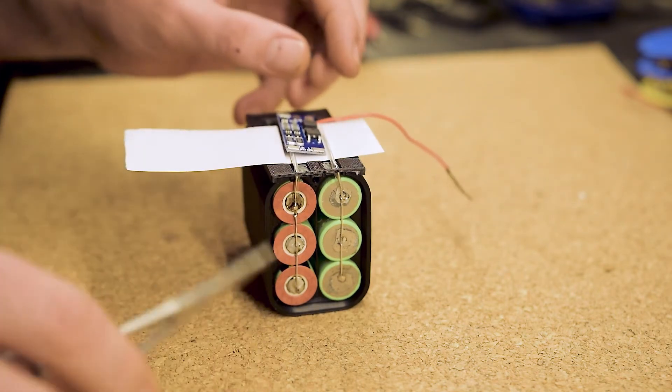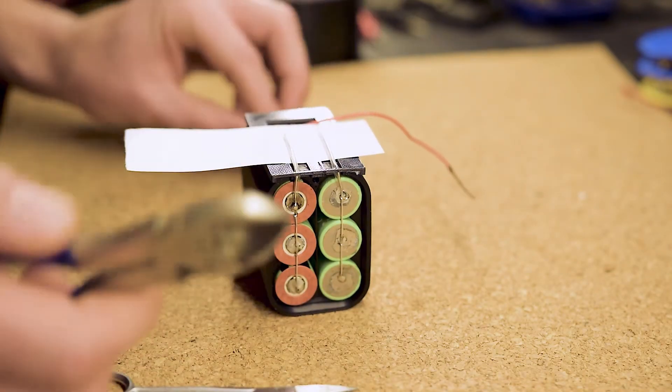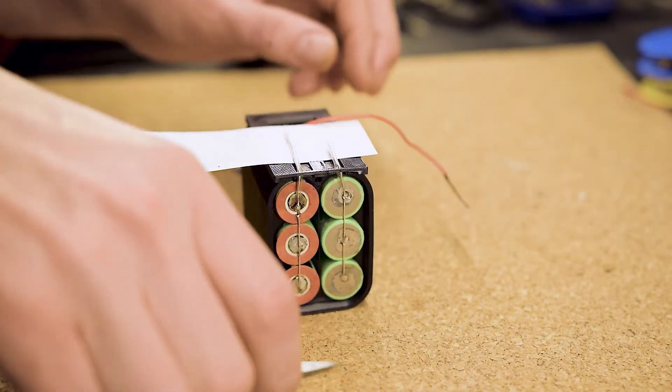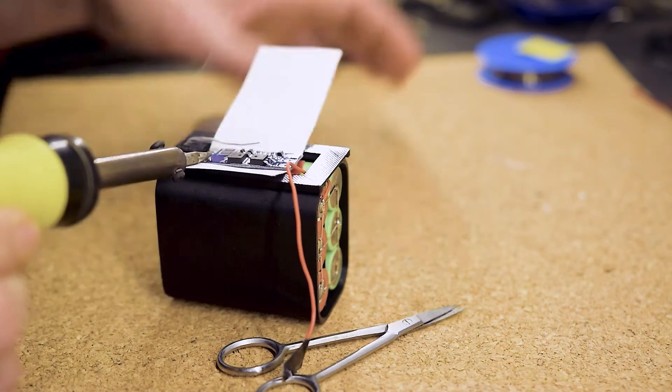Orient the BMS so that the solder pads for the battery connections point to the silver wire coming from the battery. Now, you just cut the silver wire and it should end exactly above the solder pad labeled B-minus and then solder it to the pad.